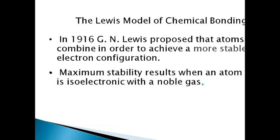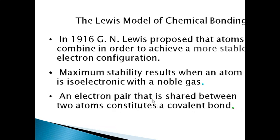Maximum stability results when an atom is isoelectronic with a noble gas. Isoelectronic means that two atoms have the same electronic configuration. So stability is achieved when an atom becomes isoelectronic with a noble gas. If this happens, we will get more stable molecules.